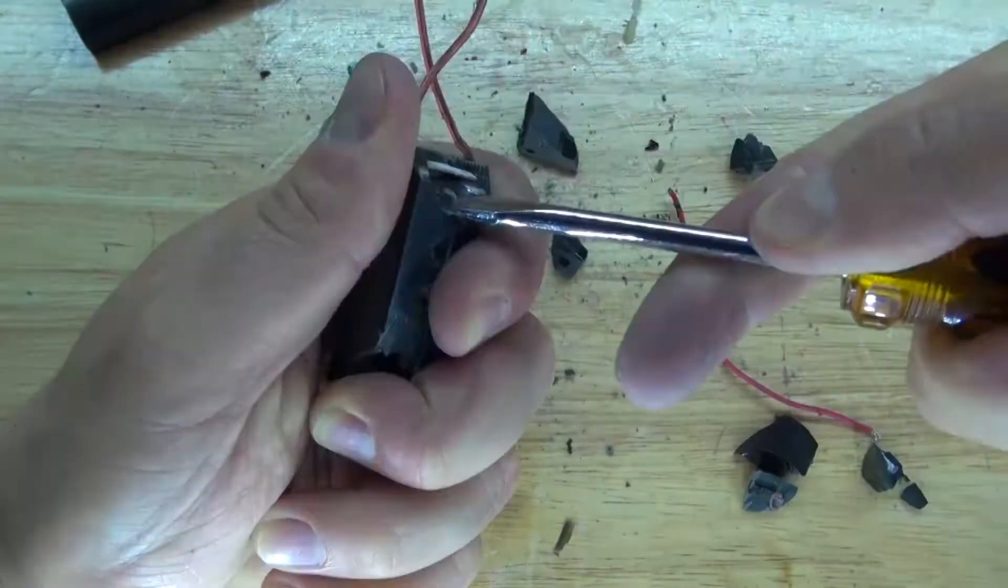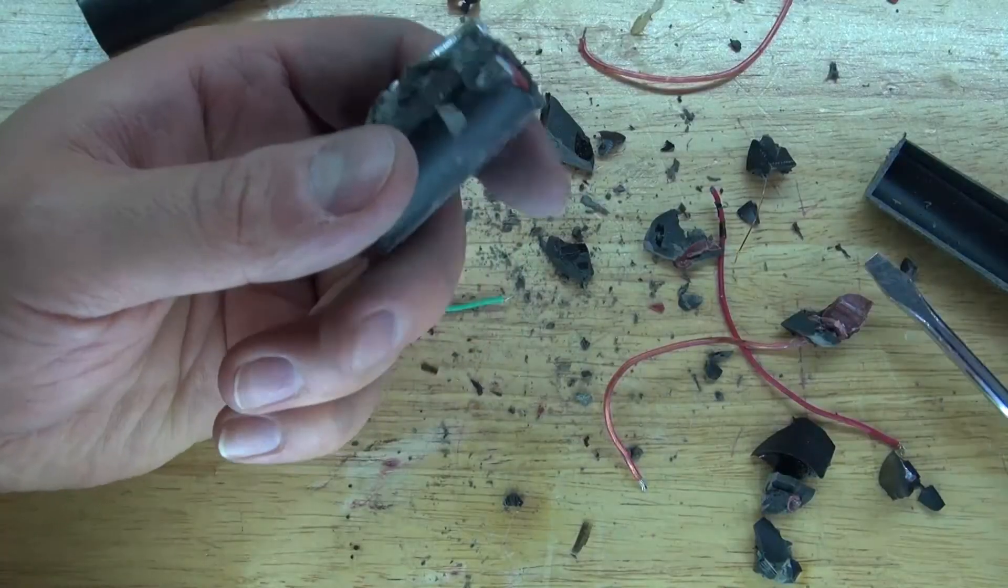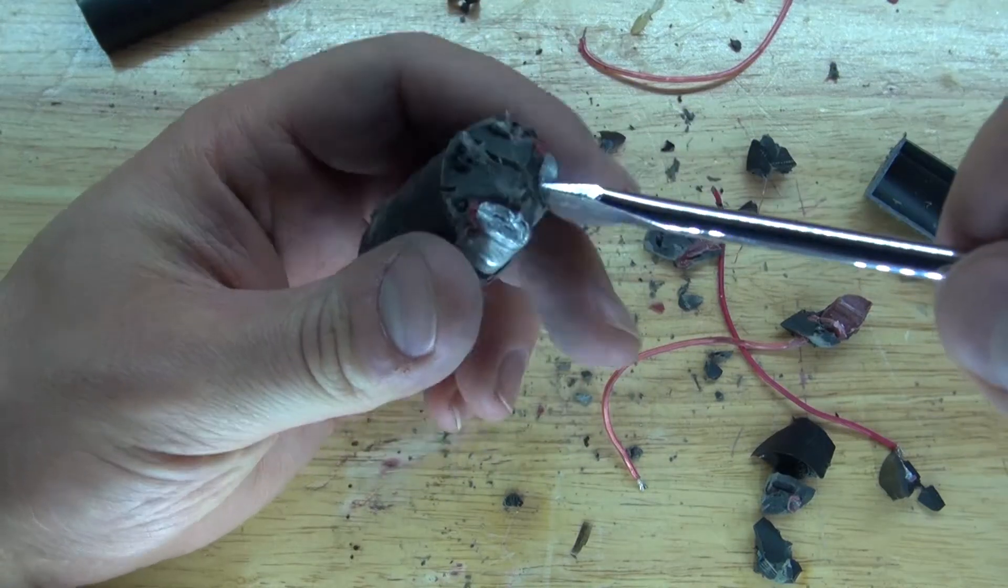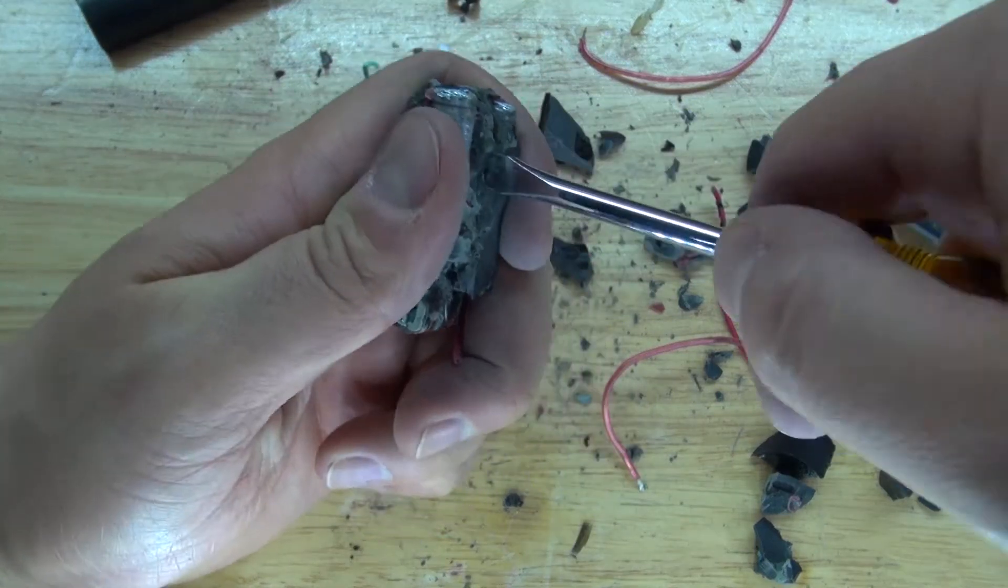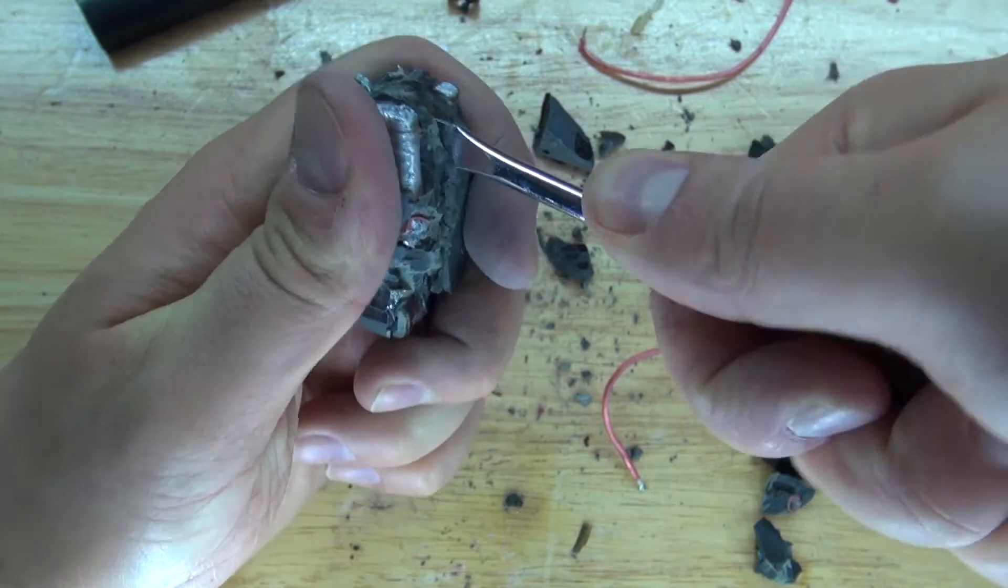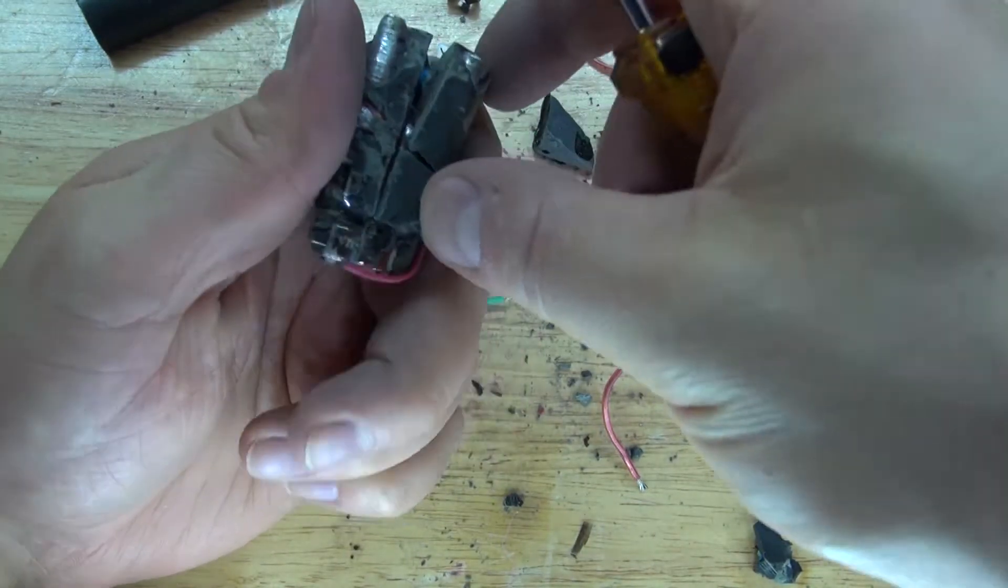Basically I'm going to take a screwdriver and just chisel away. And wire cutters will also help too. And as you can see, I've damaged a lot of the circuit inside. Of course it's entirely filled up with the epoxy resin.